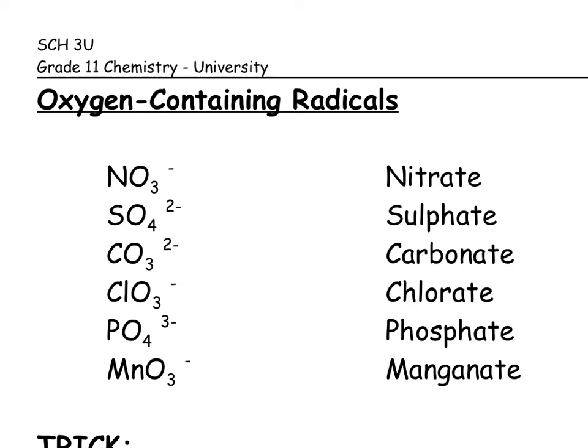Now I want to talk about the oxygen-containing radicals. These are obviously going to contain oxygen in varying amounts. You can see all of these — nitrate, sulfate, carbonate, chlorate, phosphate, and manganate — all contain oxygen in different amounts. Another way to identify them is that they all have the -ate ending. Take a minute to pause the video and write these down; they should be familiar from last year.